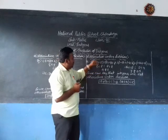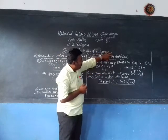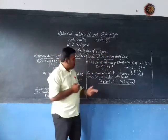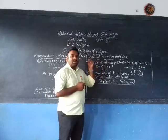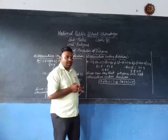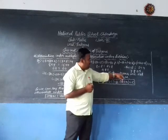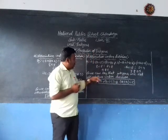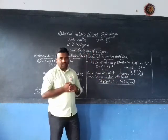In division, if we change the grouping of the operands, the result changes. That is why we can say that integers are not associative under division.